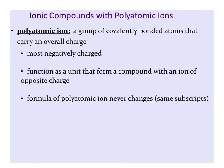We drew Lewis structures for polyatomic ions. Most polyatomic ions are negatively charged, so most polyatomic ions will be paired with a cation, something that is positively charged. When we write the chemical formula for an ionic compound that contains a polyatomic ion, we want to make sure that we never change the chemical formula for the polyatomic ion. We want to be able to recognize it as a certain polyatomic ion.